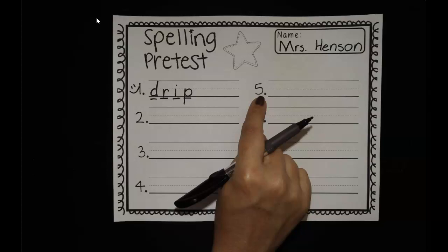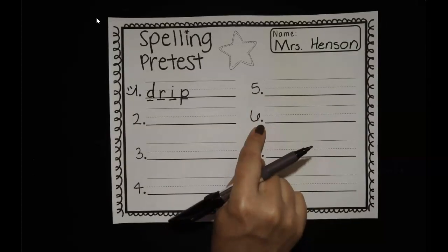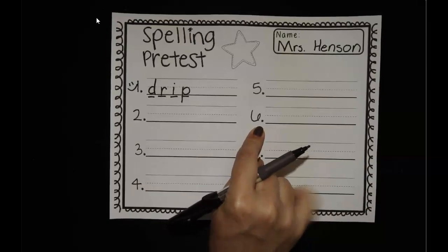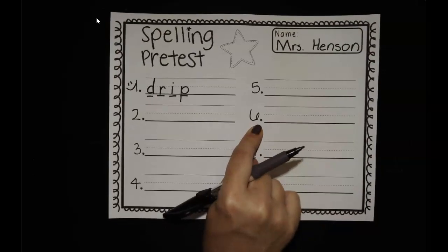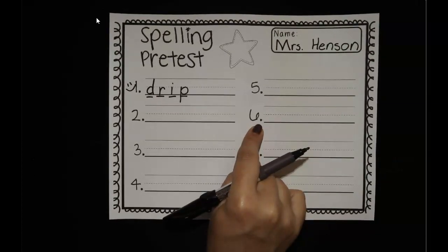Number five is spill. Spill. Be careful not to spill your milk. Spill. Push pause, take as much time as you need. The next word is spin. Spin. I like to spin around on the merry-go-round at the playground. Spin.